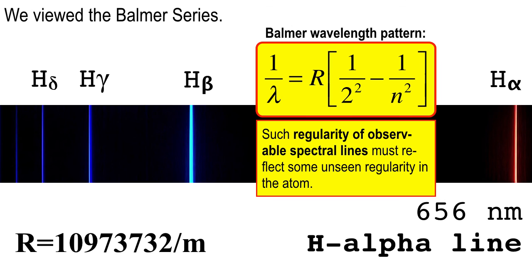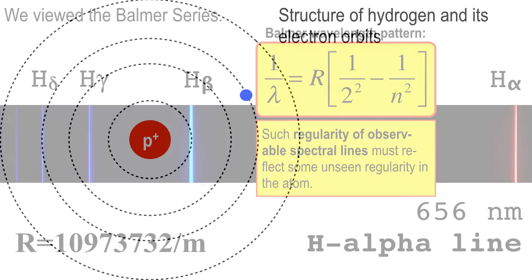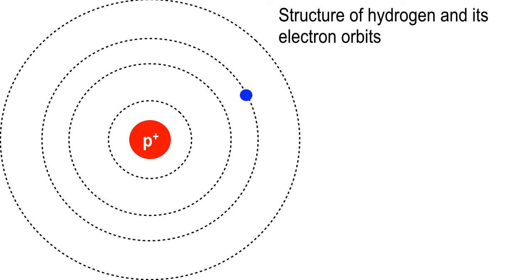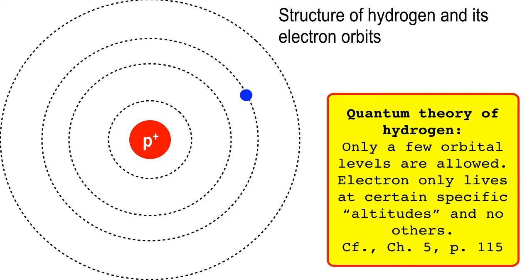The theory that explains Balmer's formula is called the quantum theory of hydrogen. Let's take a look at it. Go ahead and draw yourself a hydrogen atom — my protons are always red, my electrons are always blue. Hydrogen is pretty simple. We don't think electrons orbit on perfect circles now, but for our purposes today circular orbits are acceptable. Here's the beginning of the quantum theory of hydrogen: only a few orbital levels are allowed.